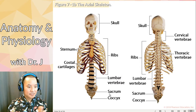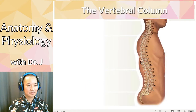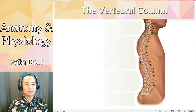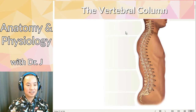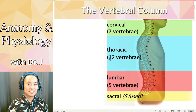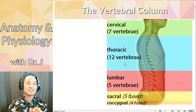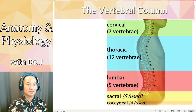Now this is the vertebral column. You have all these vertebrae. You have seven vertebrae in the cervical area. These are the major regions of the vertebral column, also known as your spinal column.